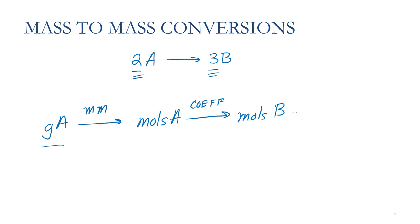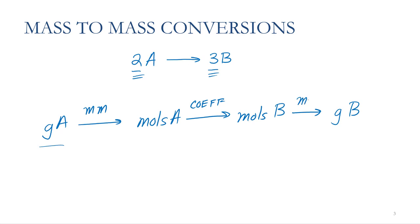And then if I want to figure out the amount of B I'm going to make, I'm going to need to convert moles of B to grams as well, and I'll need the molar mass of that substance as my conversion factor.